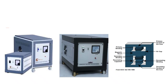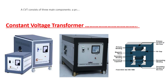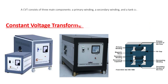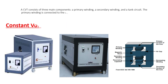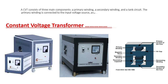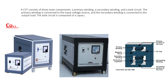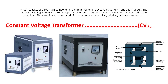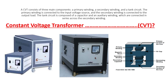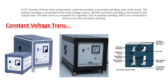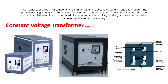A CVT consists of three main components: a primary winding, a secondary winding, and a tank circuit. The primary winding is connected to the input voltage source, and the secondary winding is connected to the output load. The tank circuit is composed of a capacitor and an auxiliary winding, which are connected in series across the secondary winding.